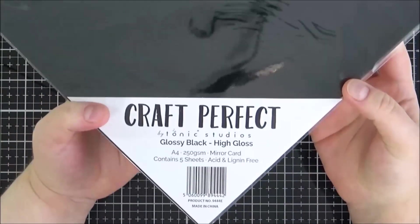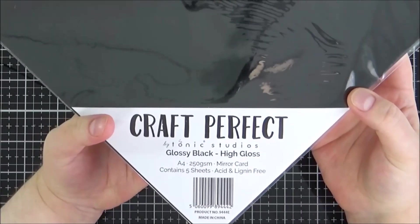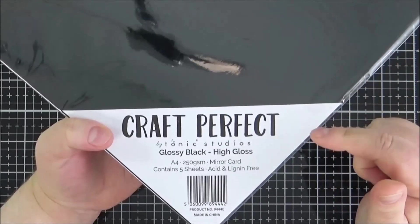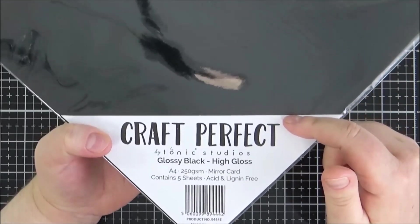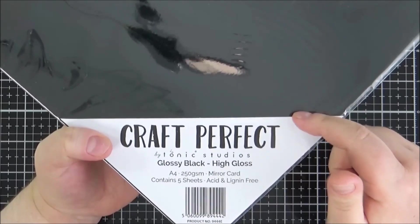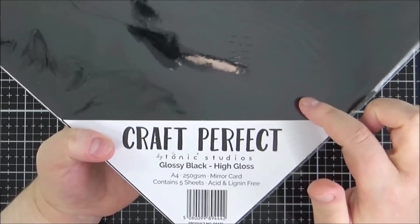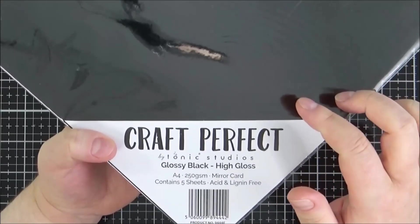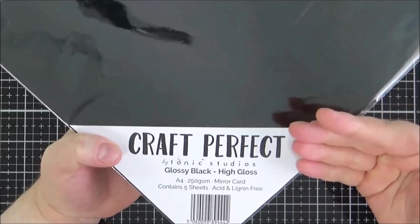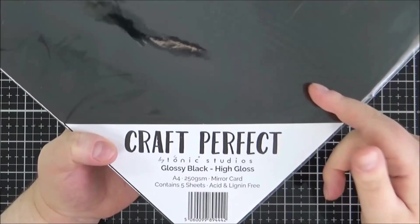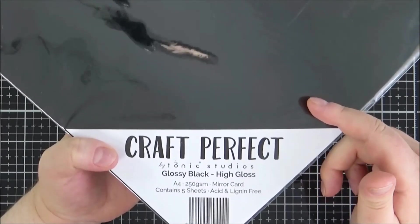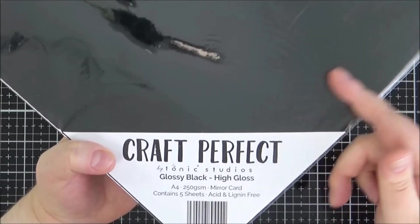I also picked up the Tonic Studios Craft Perfect Glossy Black High Gloss Cardstock. I picked this up from Craft Stash and the reason I wanted to buy it was because I saw Amy Rysavy use it in a video and she cut out the eyes of critters and their noses. Whatever she would cut out with black cardstock and then you add glossy accents to it to make it glossy. She used this cardstock and I thought it was a really great idea.